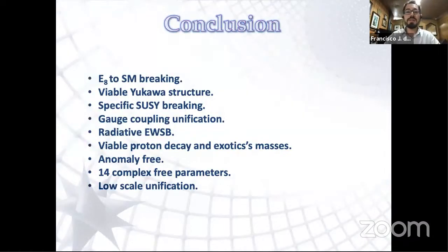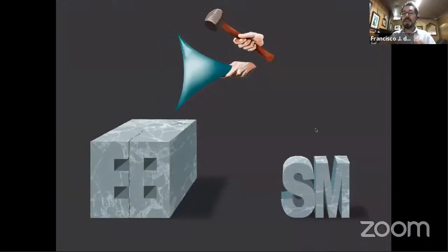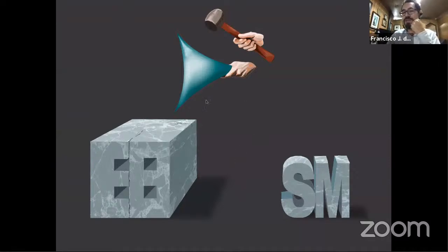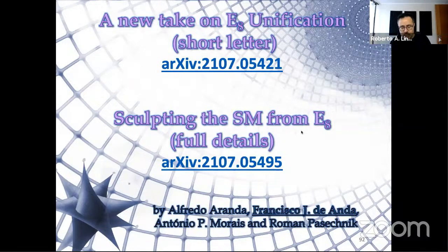In summary, we have shown: full E8-to-Standard-Model breaking, a viable Yukawa structure, a specific SUSY breaking mechanism, radiative electroweak symmetry breaking, viable proton decay, anomaly freedom, very few parameters, and a GUT scale that is not extremely high. We can sculpt the Standard Model from a single block — E8 — if you use the right chisel. For more details there is a short letter for easy reading and a full paper with complete details.